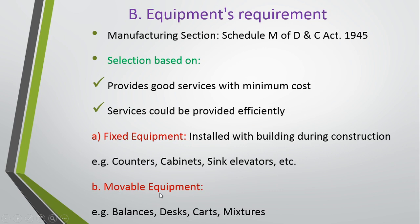The second category is movable equipment, which is opposite to fixed equipment — it is not installed with the building during construction but is required in the hospital pharmacy or manufacturing unit. Examples include balances, desks, carts, and mixers. This covers the equipment requirement in the hospital pharmacy section.